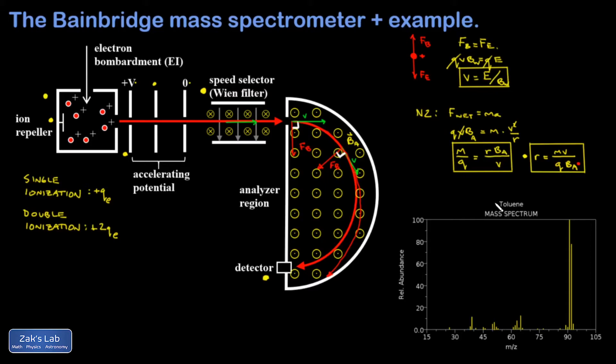And in fact, for the mass spectrum of toluene shown down here in the corner, that's exactly what we're looking at. We're looking at the masses of a bunch of different fragments of the toluene molecule. And this produces a characteristic toluene signature.